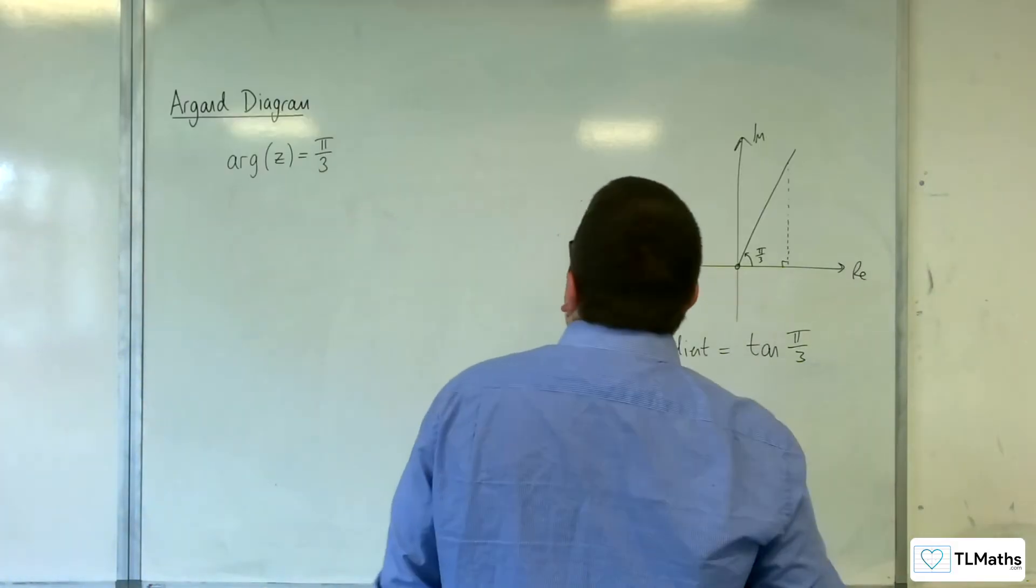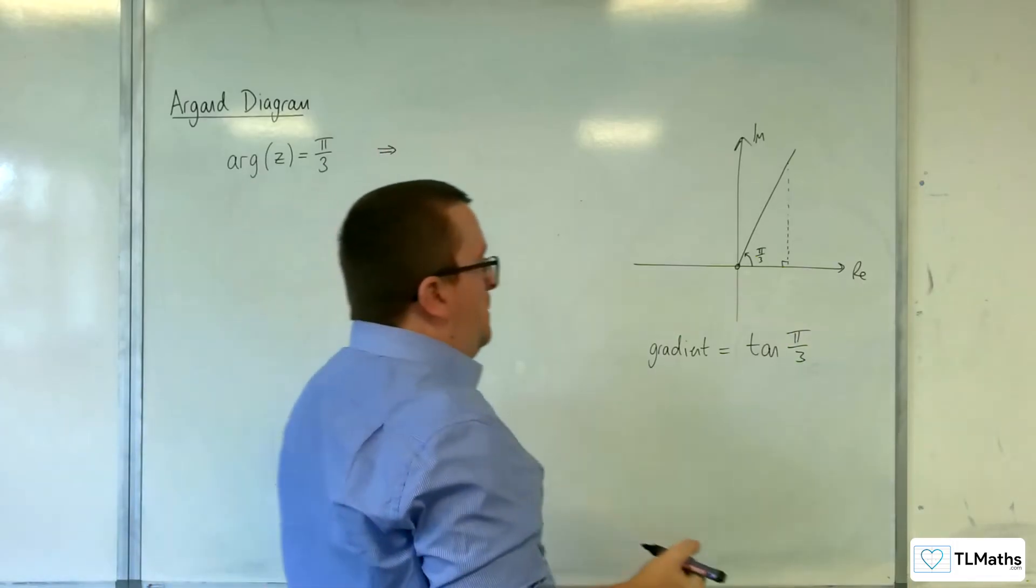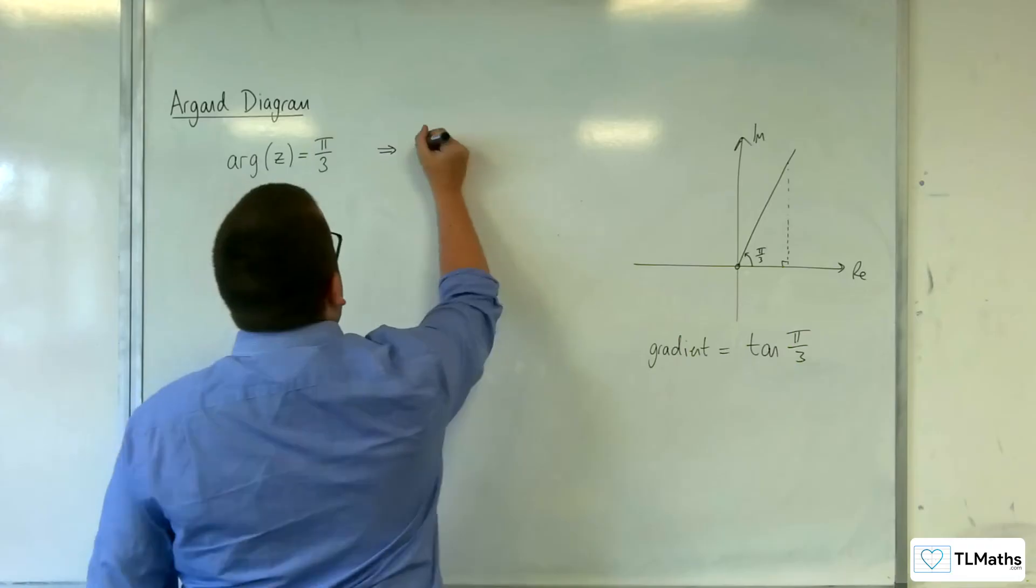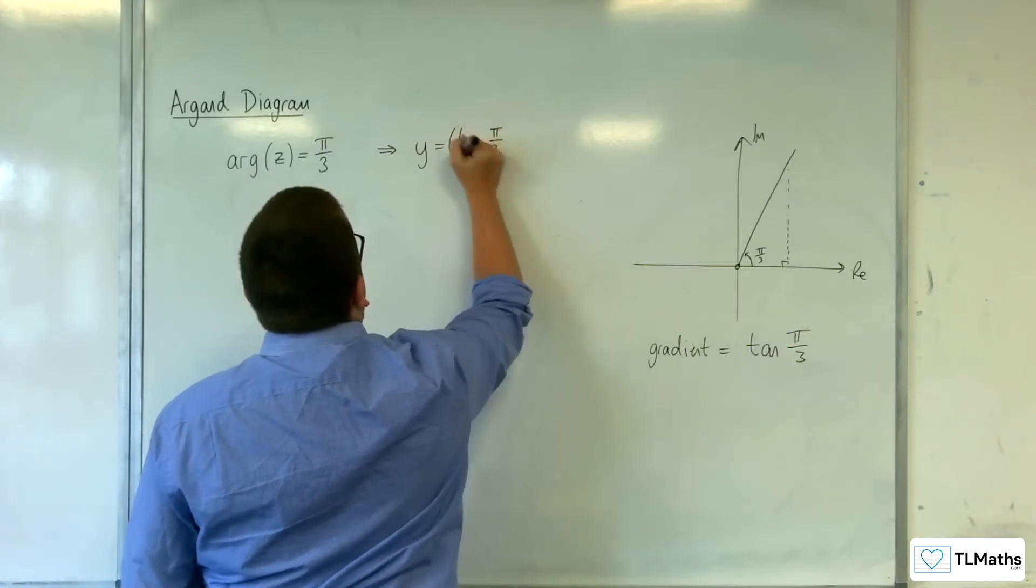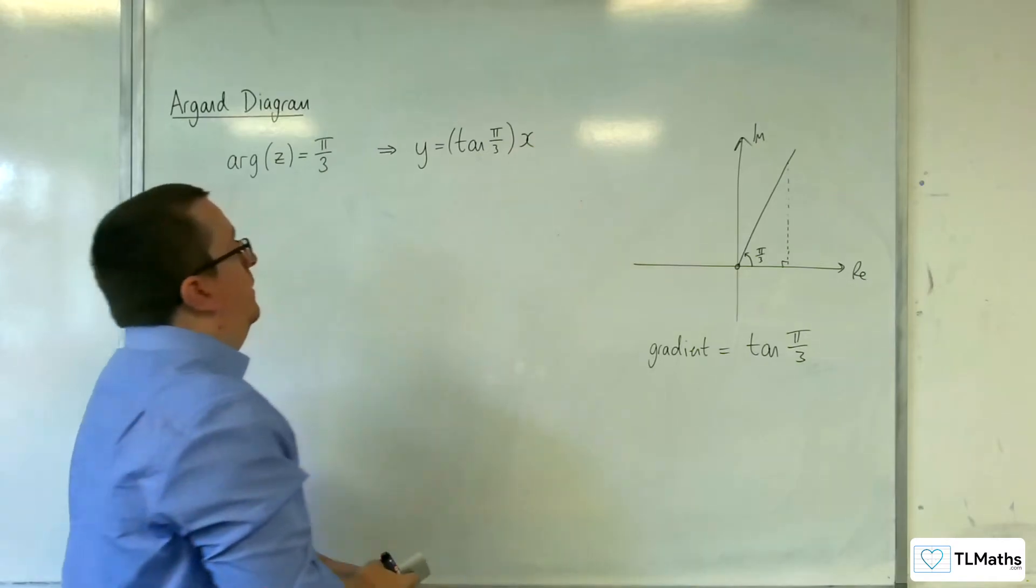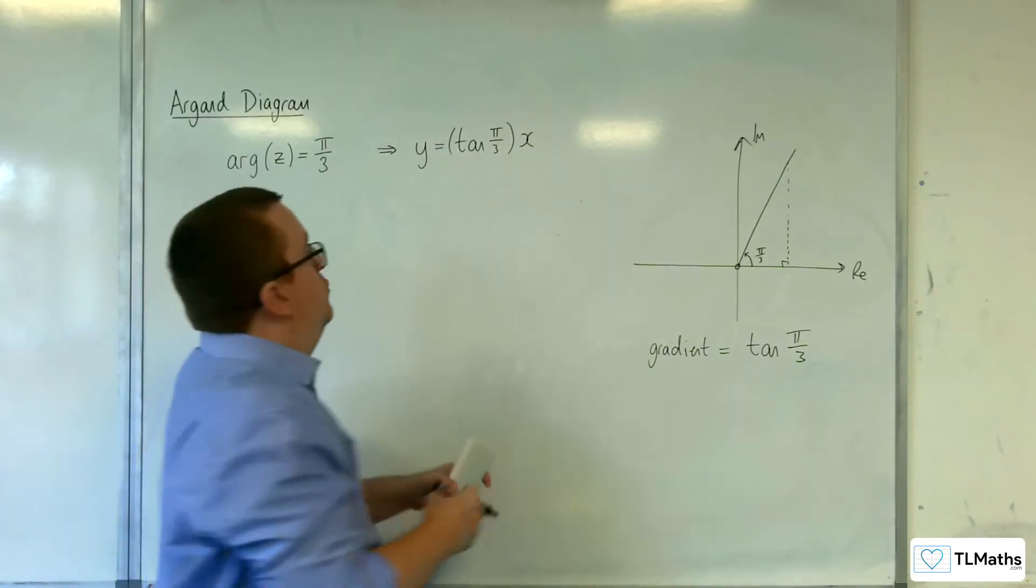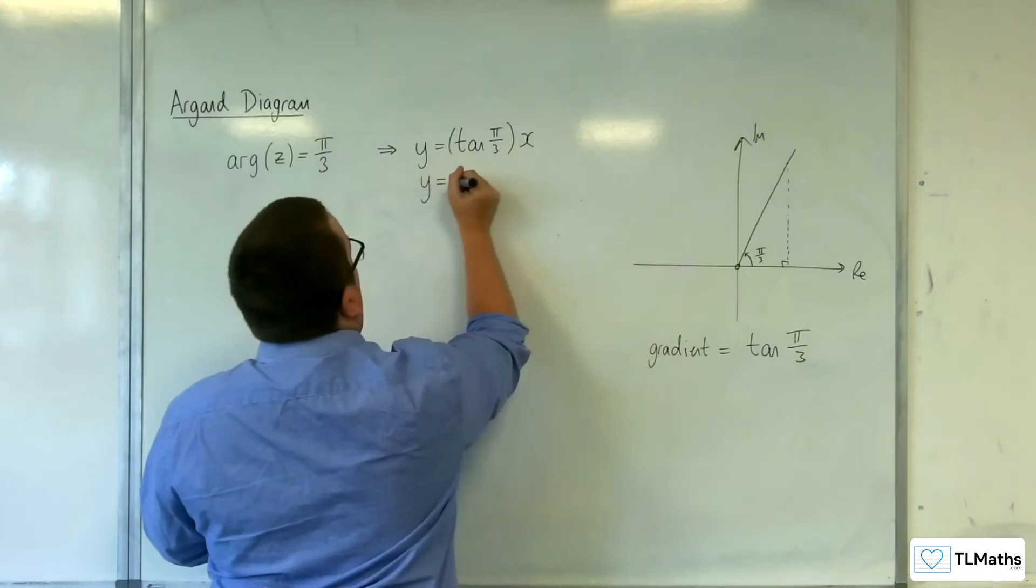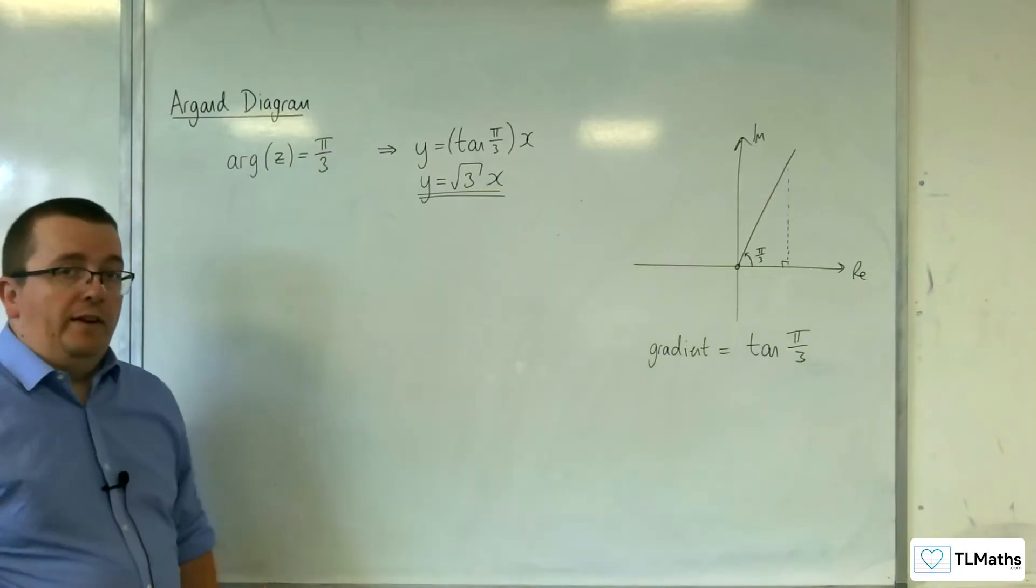So that means that I can go to my Cartesian form by saying it's going to be y equals tan(π/3) times x. Tan of π/3 is √3, so y equals √3x is the Cartesian form that I am interested in.